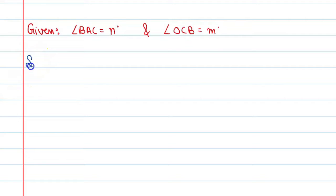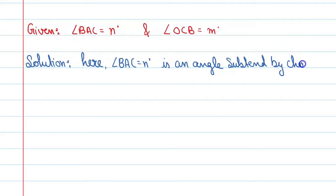Solution. We can say here angle BAC, which is equal to n degrees, is the angle subtended by the chord at any point on the circle.